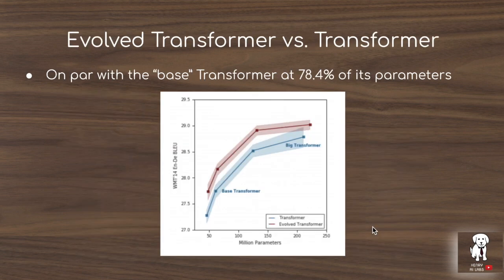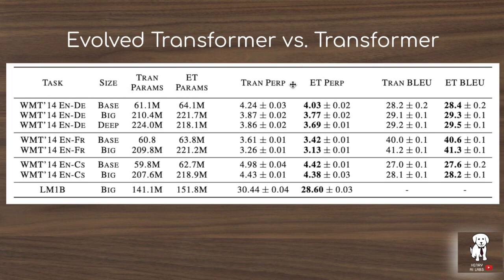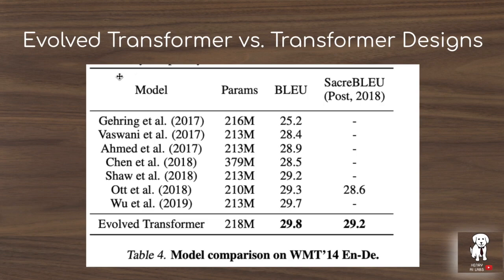The Evolved Transformer outperforms the original Transformer, especially at the mid-scale of parameter count, although performance tends to saturate toward the larger end. The Evolved Transformer is more parameter efficient than the base Transformer. Looking at further results, the Evolved Transformer outperforms the original Transformer on perplexity, where lower is better, and on BLEU score, where higher is better. This comparison is similar to how neural architecture search on ImageNet classification would compare manual designs like VGG16, DenseNets, or ResNets against automated results like AmoebaNet or NASNet — showing that automated search is able to surpass manually designed architectures.